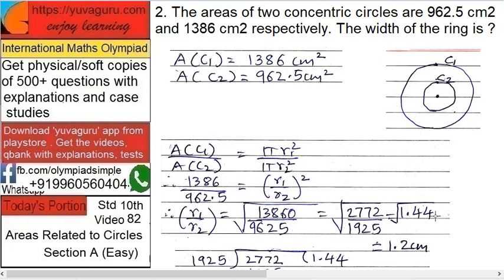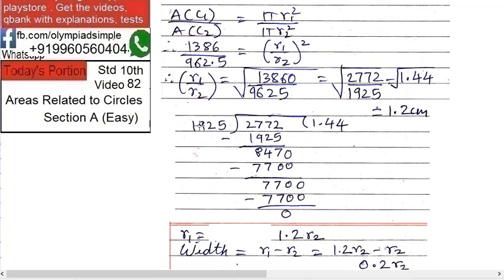So R1 upon R2 equals square root of 1386.0 upon 962.5. Why 0? Because this decimal point gone, so above 0. Divide it and bring it to the minimal. Go on dividing. You will get square root of 1.44.